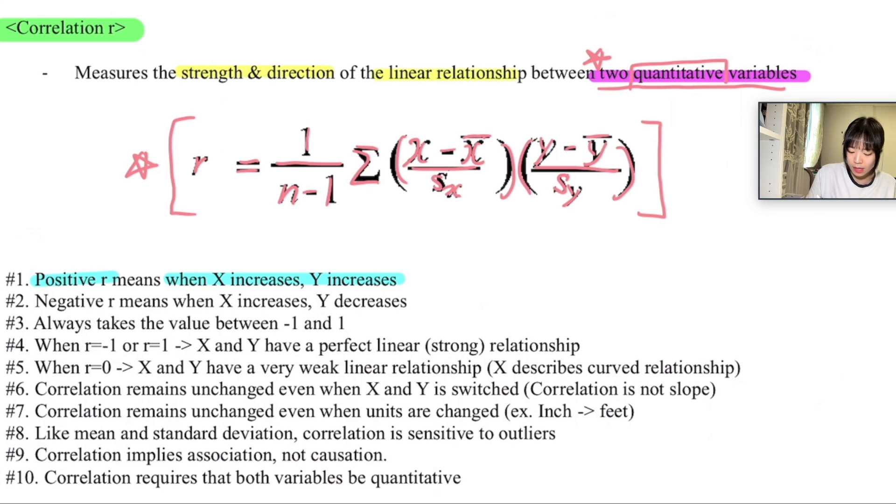On the contrary, negative r will be that when x increases, y decreases. When x and y move in a different direction, we're going to say that they have a negative correlation. And this is also important to remember that it always takes a value between minus 1 and 1.